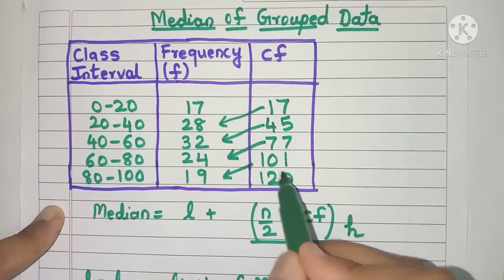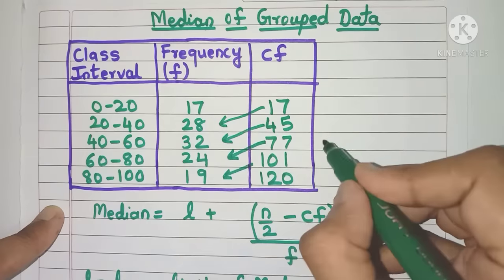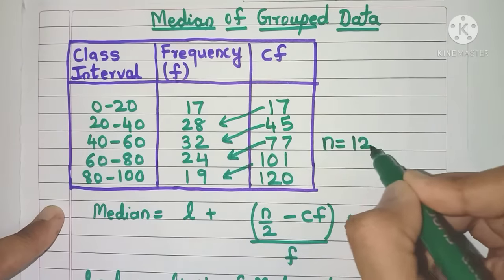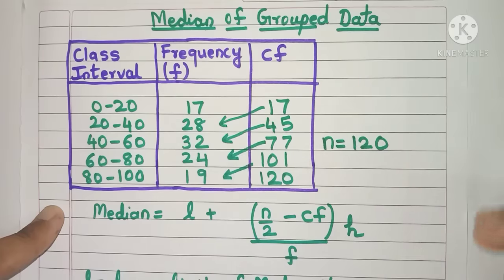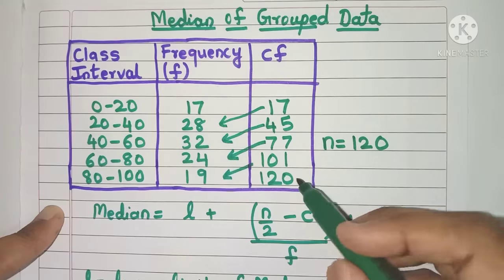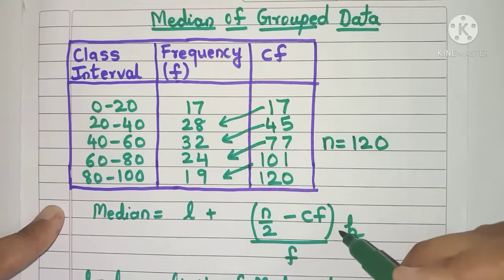At the end, you will get the total as 120. This 120 is nothing but the total number of observations. So even if they don't give in the question how many observations there are, you can easily find this out using the CF column.